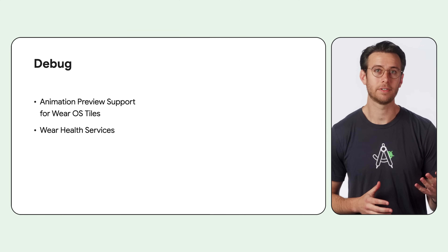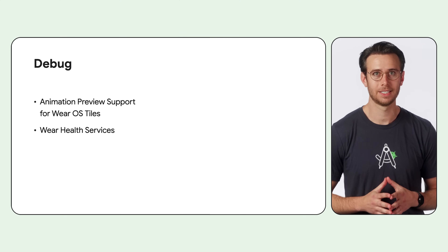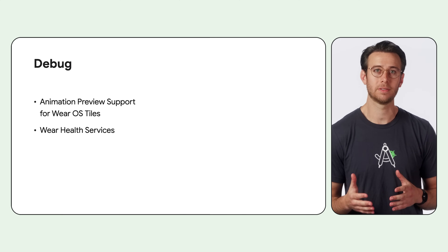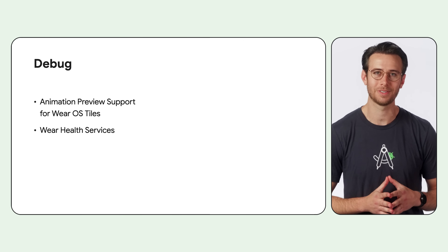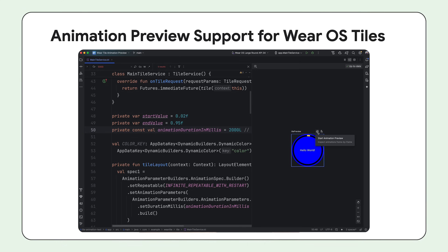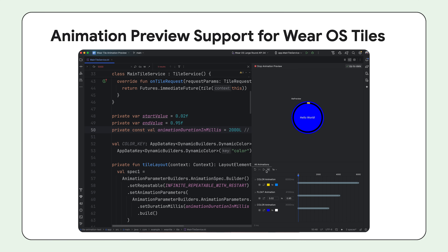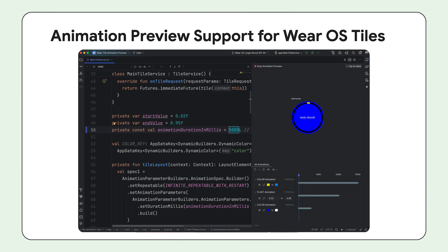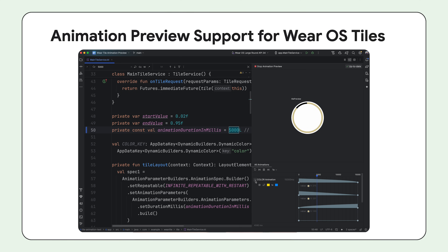Now that we've covered how Gemini can accelerate your development process, let's shift gears and explore some powerful new debugging tools. We've added animation preview support to help you visualize and debug Wear OS styles. Now you can see your animations in real time, control playback, and inspect key properties. You can even modify your code and instantly see the results, helping streamline your development process so you can create high-quality Wear OS experiences.